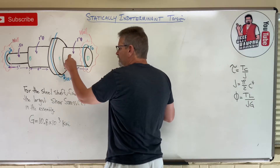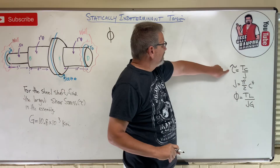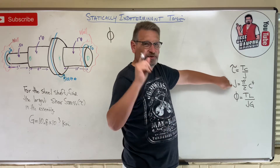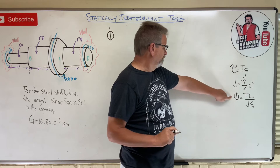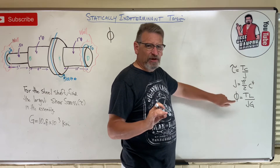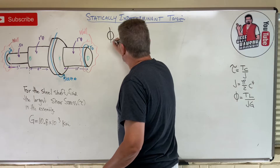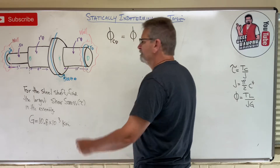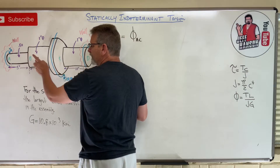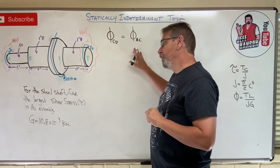So as this thing rotates, we know that phi from section CD has to equal phi from section AC. Remember the equations: tau equals Tc over J for shear stress due to torsion, J is the polar moment of inertia for a round shaft, and phi equals TL over JG for the angle of twist. Each side is going to have the exact same angle of twist. Now, AC is made up of sections AB and BC, so those two together have to equal the twist over here. I know that equation must be true.